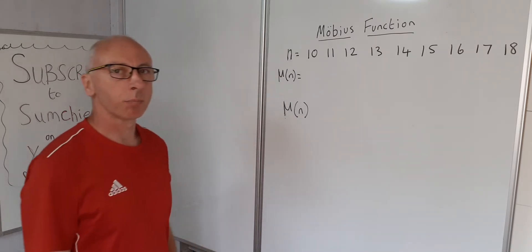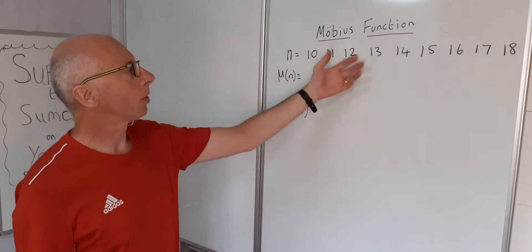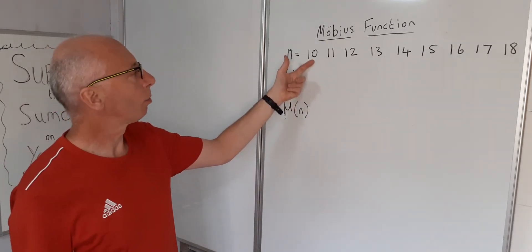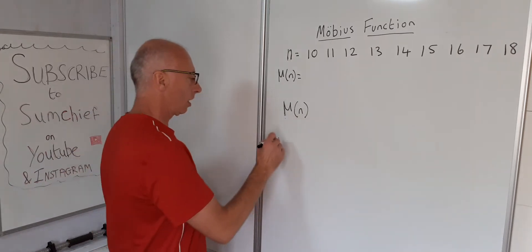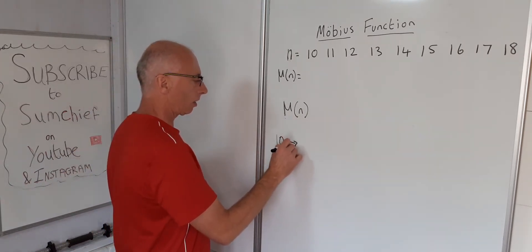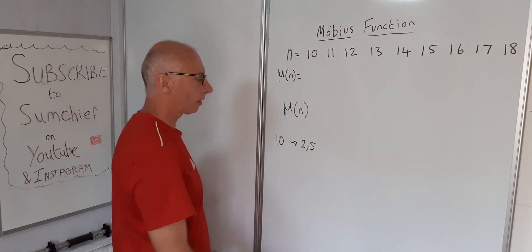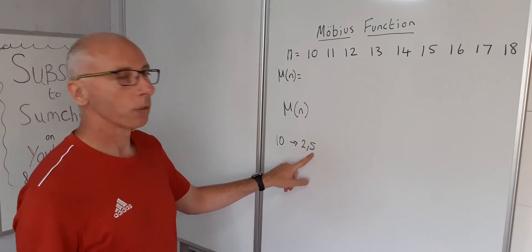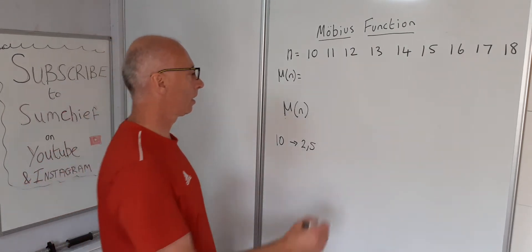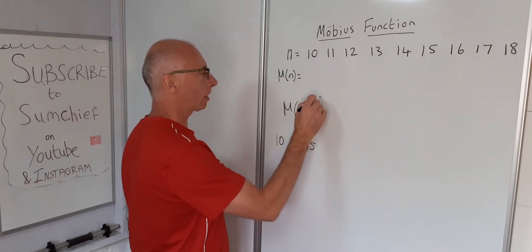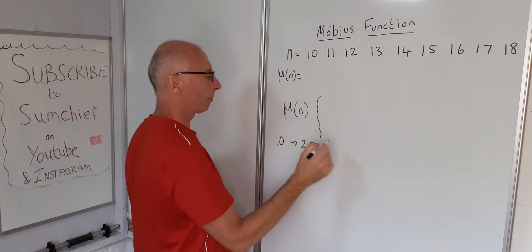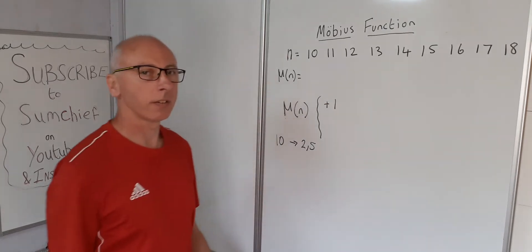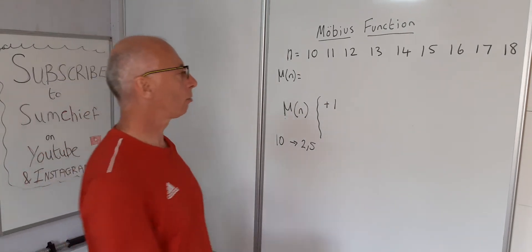What we're looking for is the prime factors that make up the number n. For example, if we take 10, the prime factors of 10 are 2 and 5. Those two prime factors signify that mu of n equals positive 1. So mu of n is positive 1 if there is an even number of prime factors.